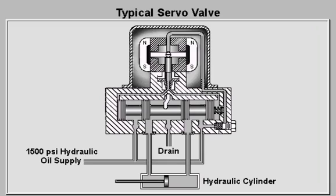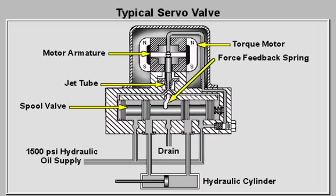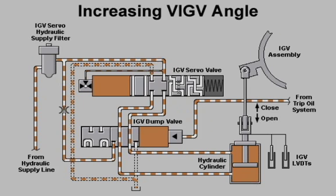The major parts of a typical servo valve are the torque motor, motor armature, jet tube, spool valve, force feedback spring, and fail-safe bias spring.